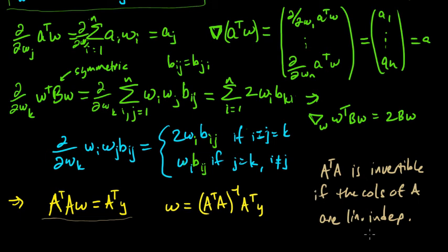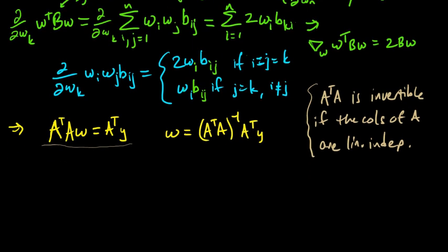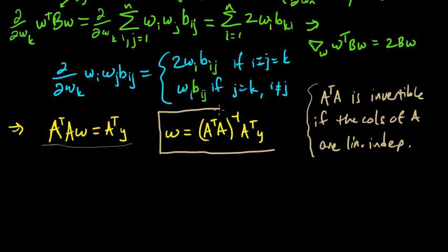So let's assume this, and in order to be able to invert this thing, we'll assume this. We can invert this under these assumptions and solve for W. We get W equals A transpose A inverse times A transpose Y.